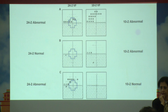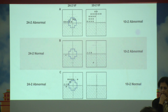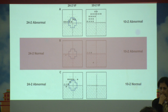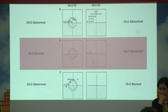There are three permutations and combinations we will experience in practice. The most important is when 24-2 is normal but 10-2 picks up damage. The second is when 24-2 is abnormal and 10-2 is also abnormal — less significant as we already have an abnormality. The third, the traditional pattern, is where the periphery is lost first leading to tubular vision, and then 10-2 gets involved — the traditional school of thought.